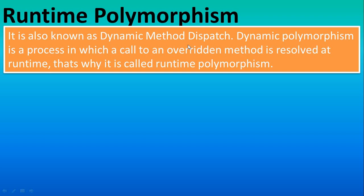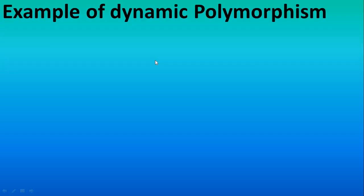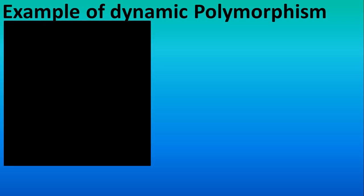It is known as dynamic. Dynamic polymorphism is a process in which a call to an overridden method is resolved at the runtime. That's why it is runtime, because the methods are resolved at runtime. Method overriding is the example of that, which we also discussed in the previous tutorial.